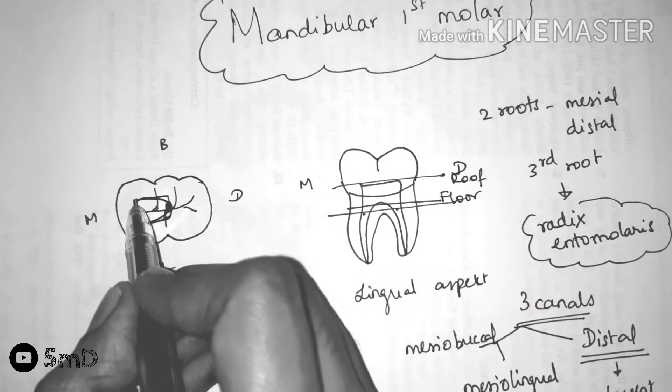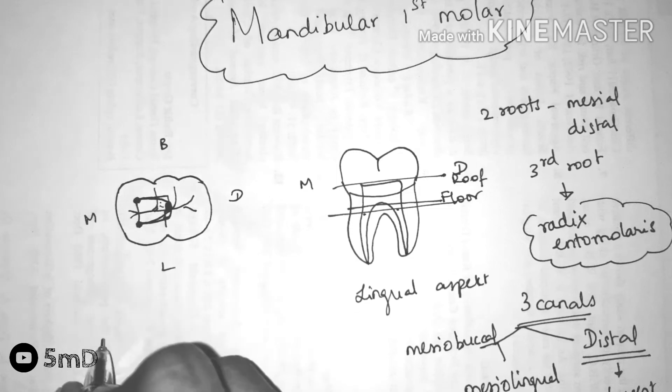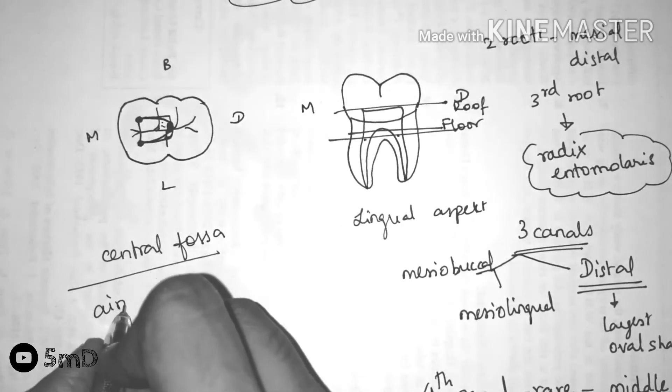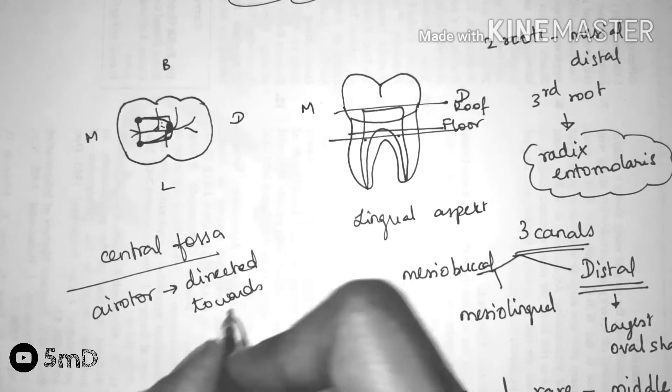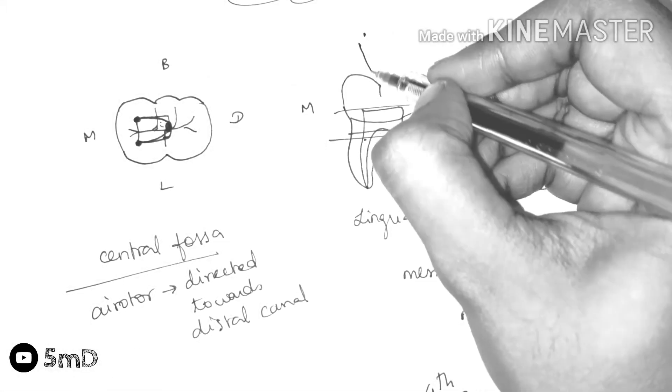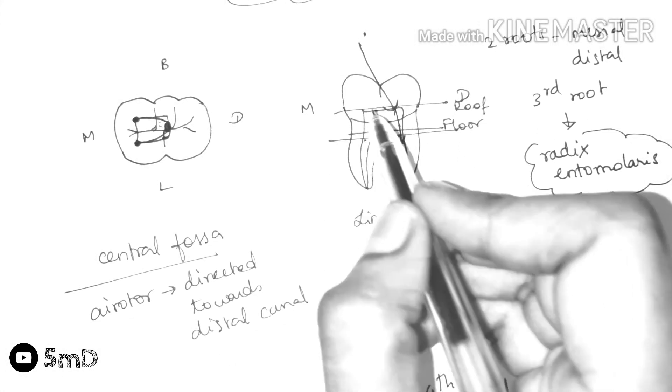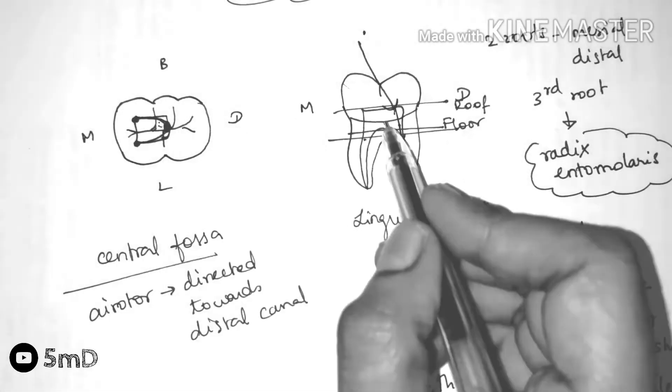Let us see how to locate the canal orifices. Start from the central fossa. Use your air rotor directed towards the distal canal from the mesial direction. After penetrating the roof and the floor, you will reach the distal canal.